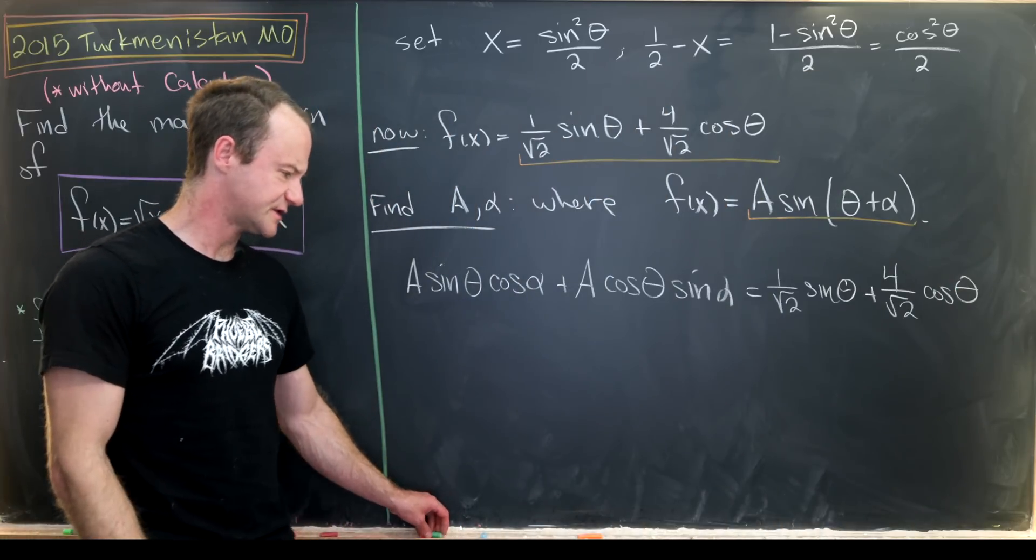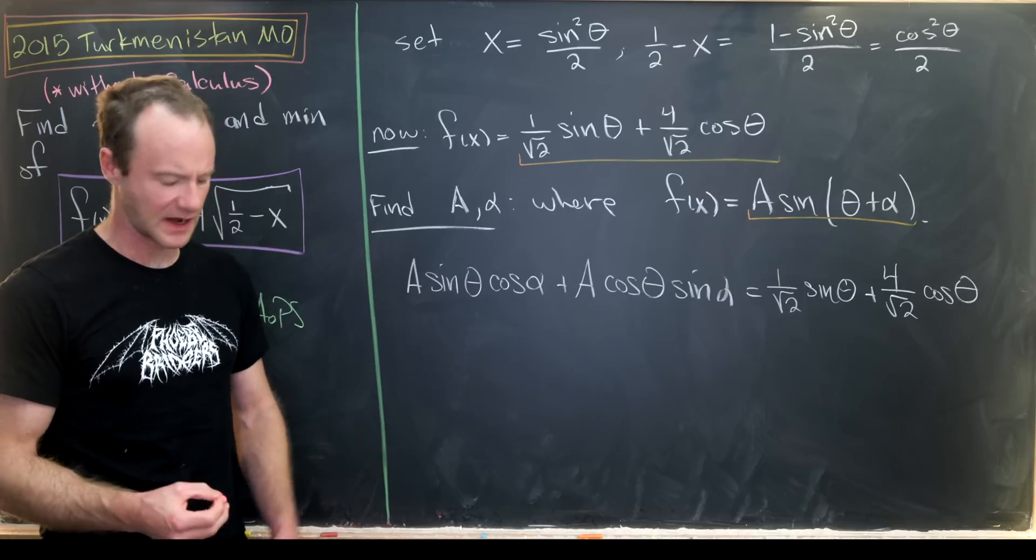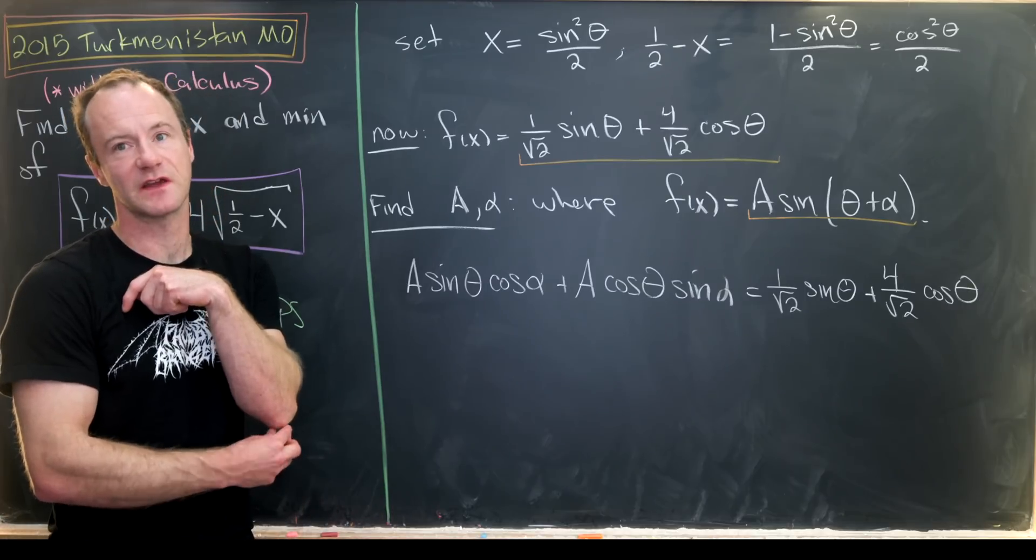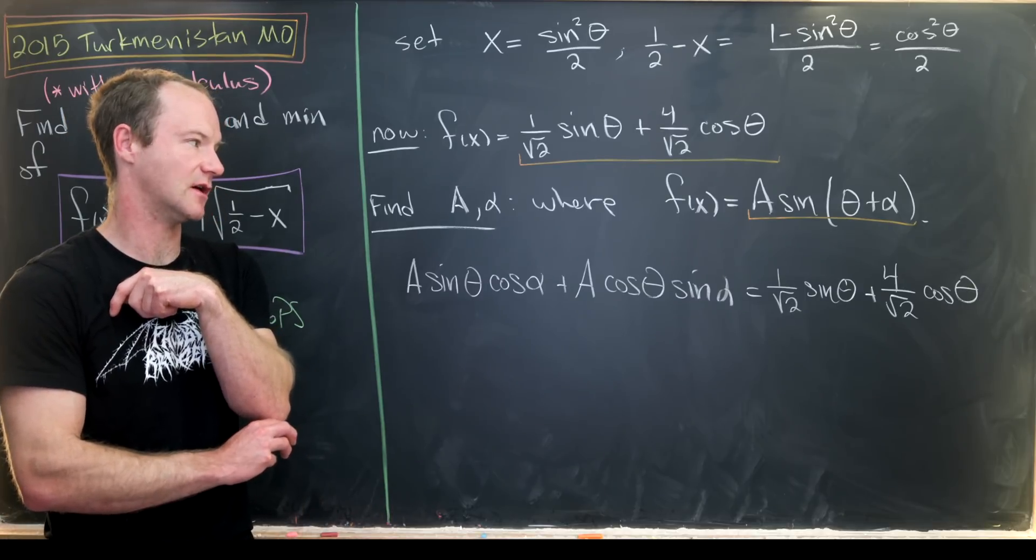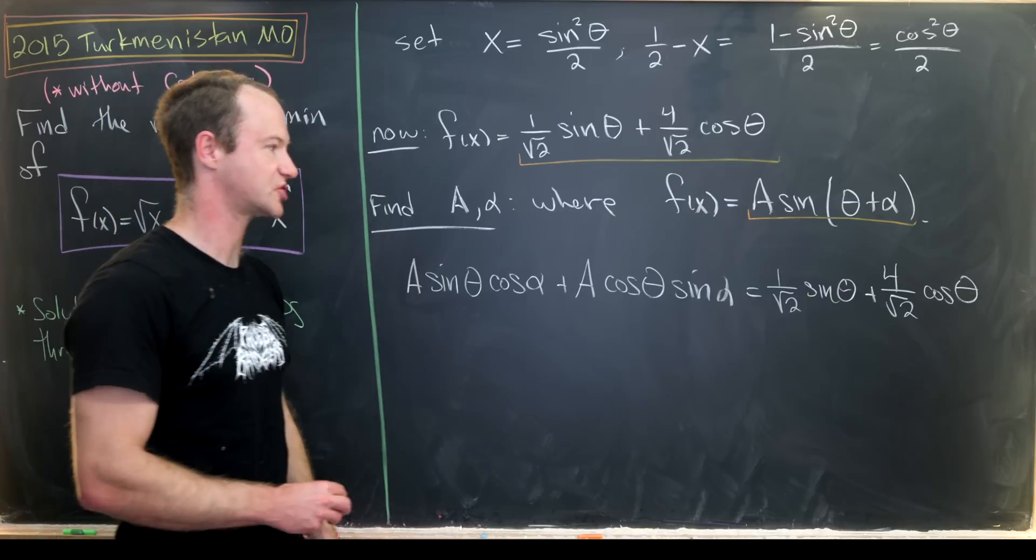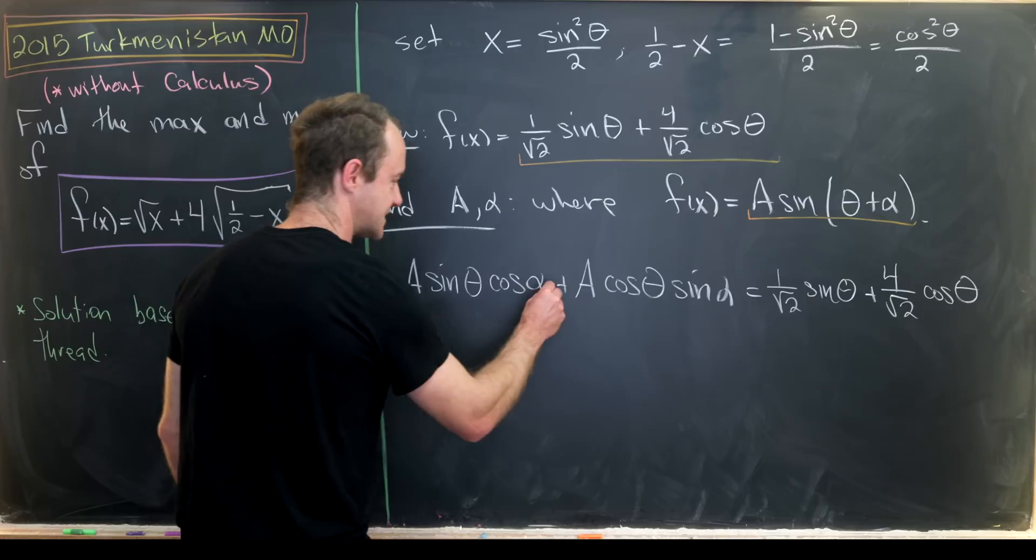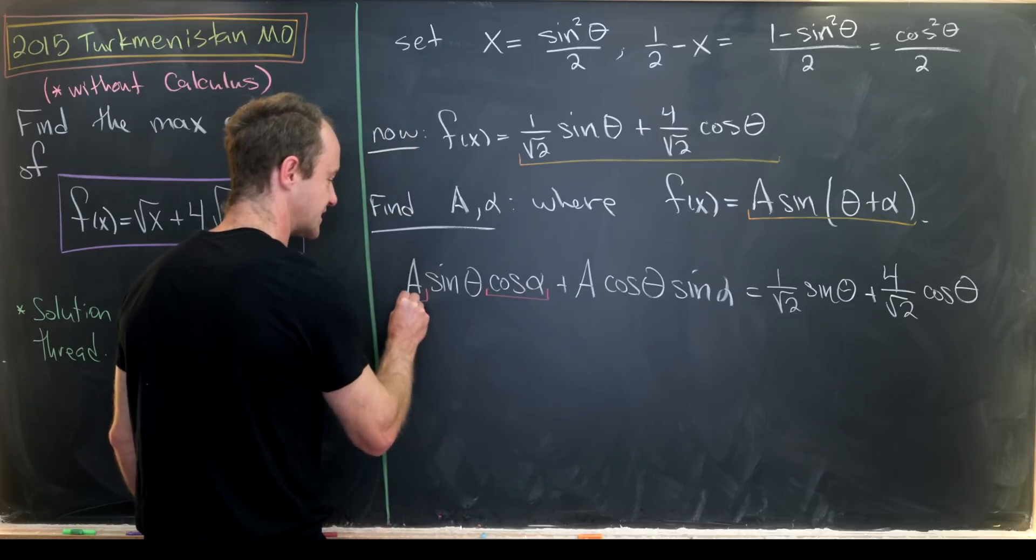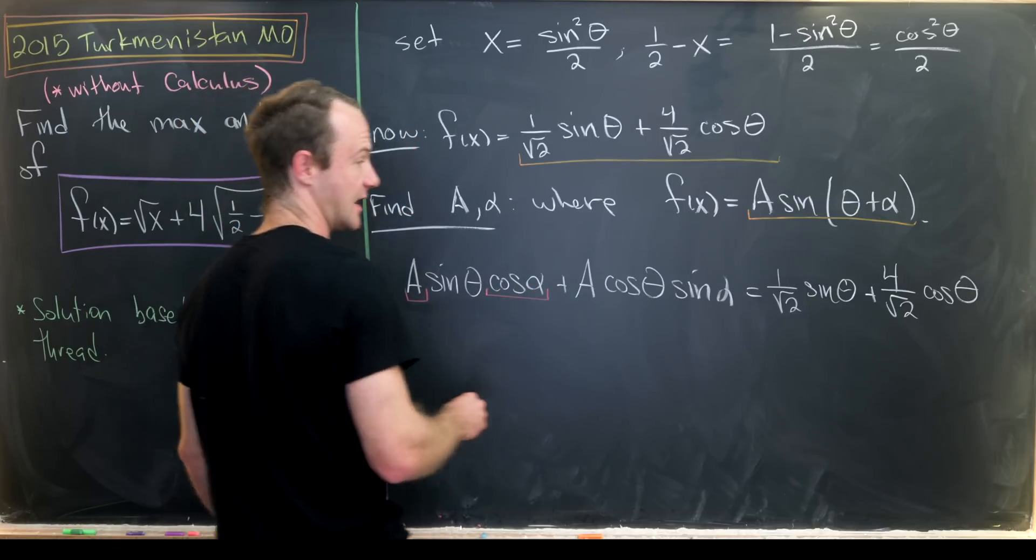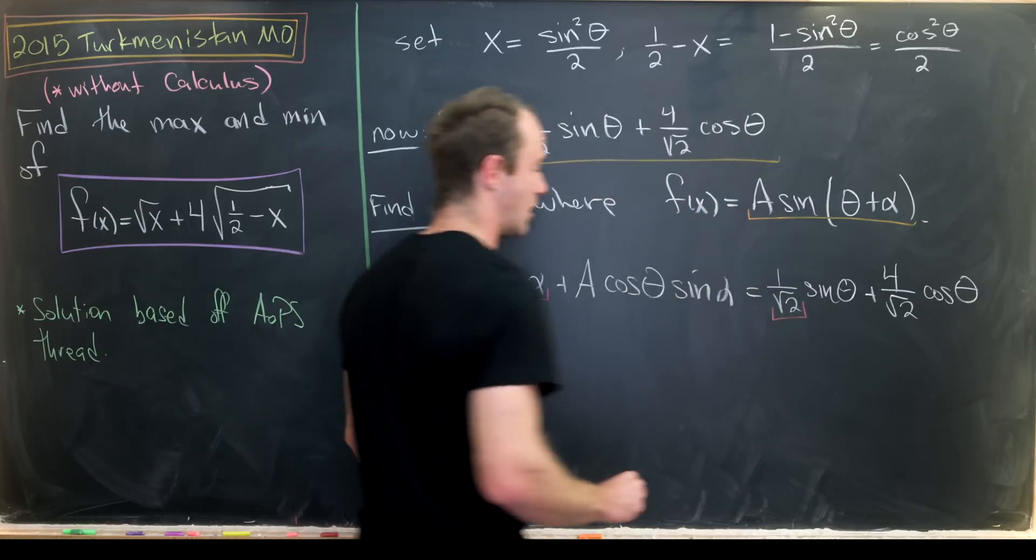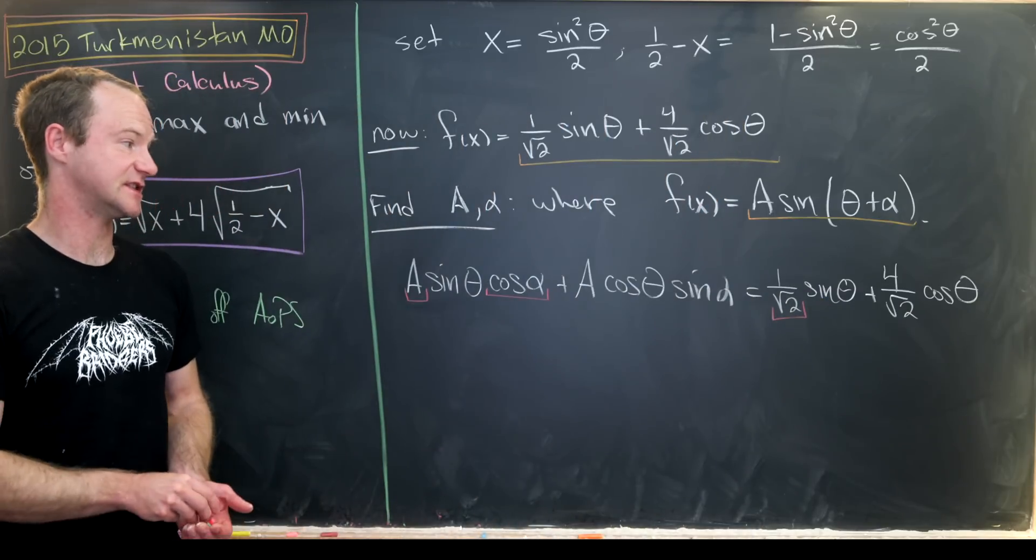And now we're going to use something that may sound a little bit technical, but I think it's okay. So now we'll use the fact that cosine of theta and sine of theta are linearly independent functions. And what does that allow us to do? That allows us to set the coefficient of the sine of theta, which I'll underline in red, equal to each other on both sides of this equation.